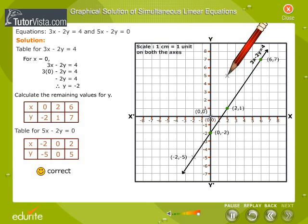You got it. This is the required line of the equation 5x minus 2y is equal to 0.